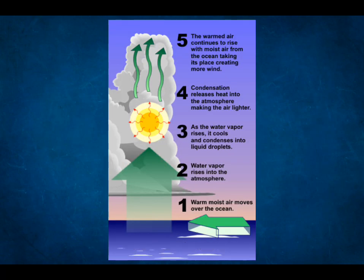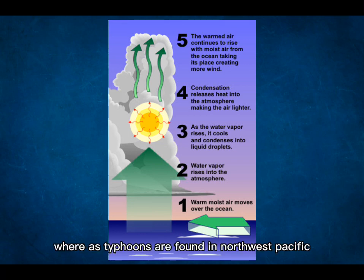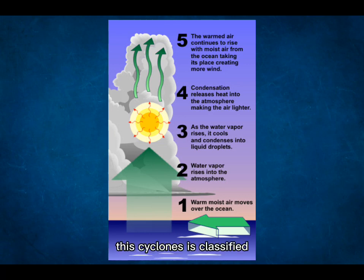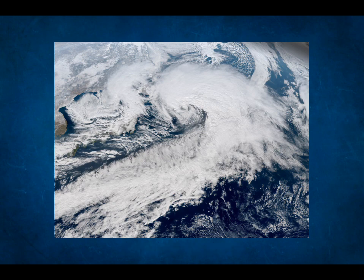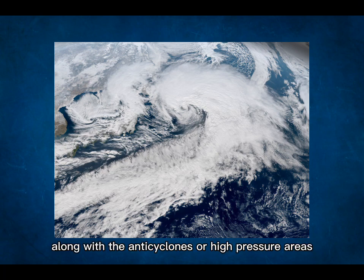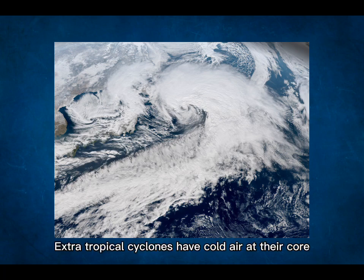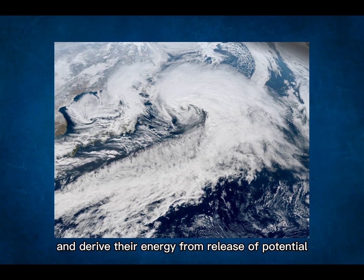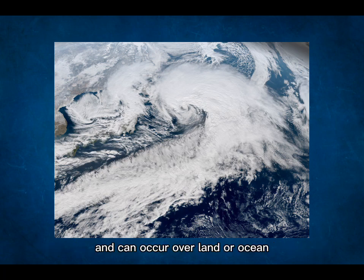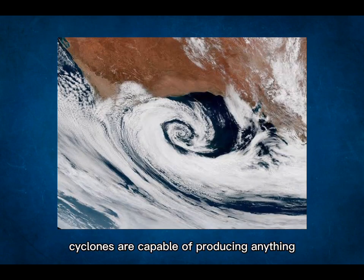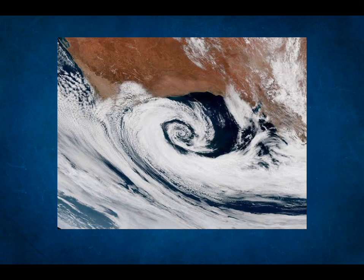Tropical cyclones occur over tropical ocean regions and are of two types: hurricanes and typhoons. Hurricanes are found in the Atlantic and Northeast Pacific, whereas typhoons are found in the Northwest Pacific. Based on intensity and wind speed, this cyclone is classified into five categories, with category five having wind speeds of 155 miles per hour or above. Extra-tropical cyclones, sometimes called mid-latitude or wave cyclones, are low-pressure areas that drive weather over much of the Earth. They have cold air at their core, derive energy from the interaction of cold and warm air masses, and can produce anything from mild showers to heavy gales, thunderstorms, blizzards, and tornadoes.